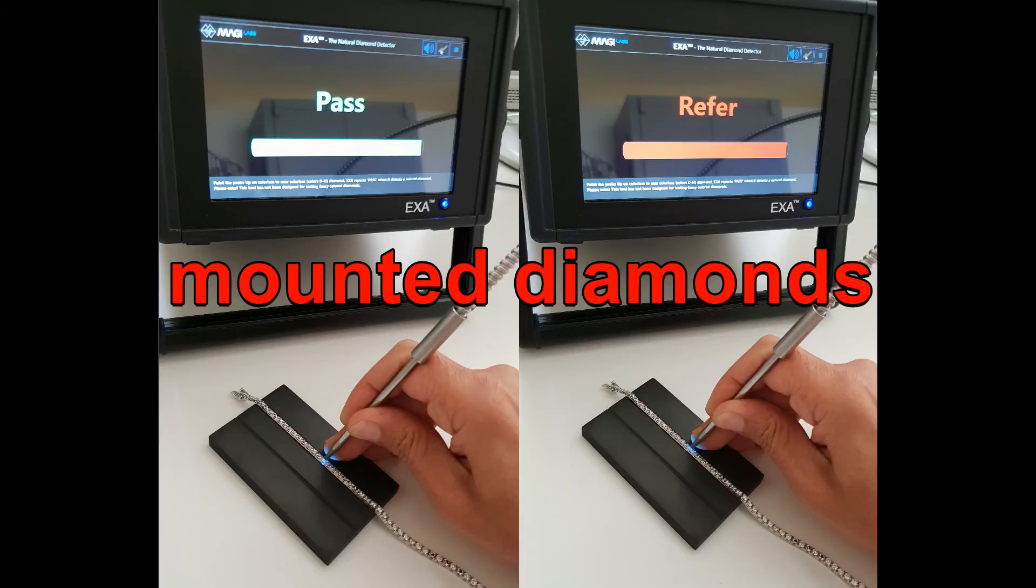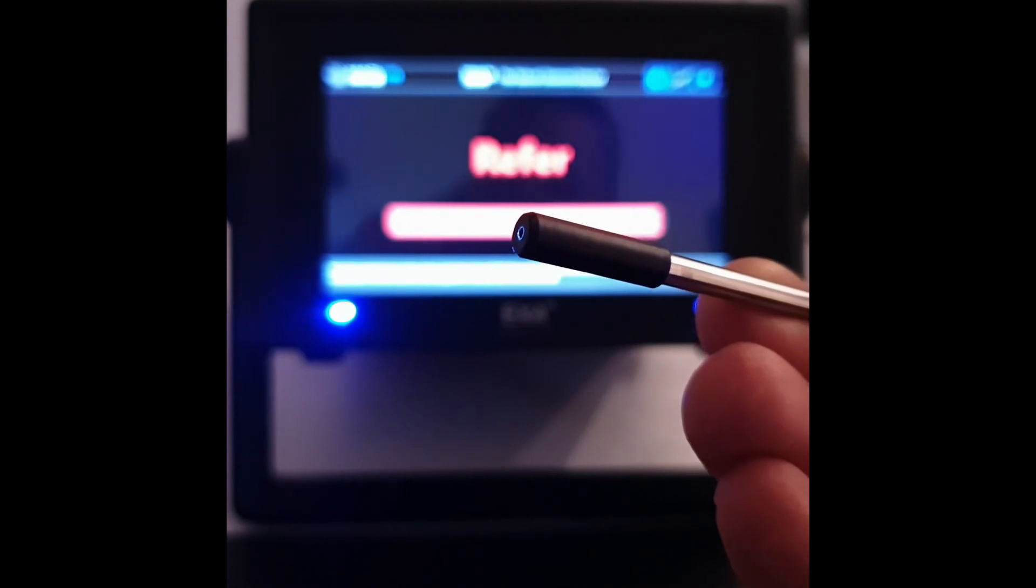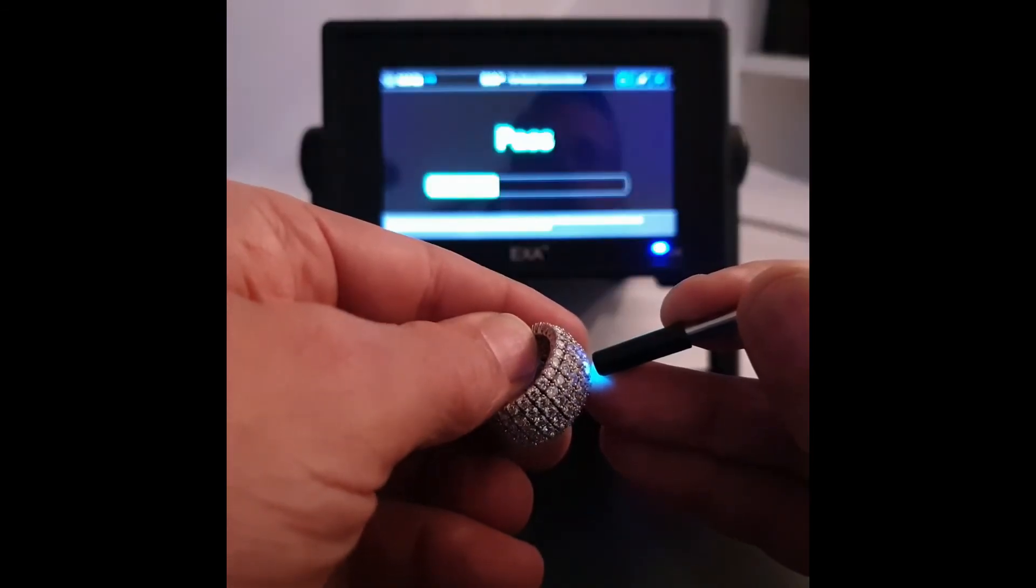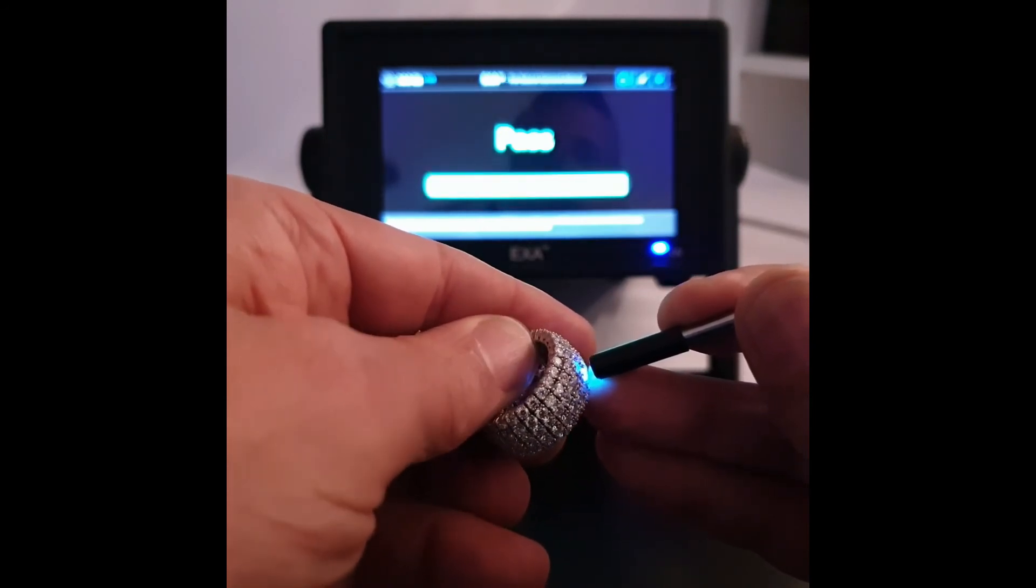Testing mounted diamonds in standard mode: For testing small mounted diamonds, it can be useful to plug the specific adapter provided to reduce the size of the beam. Just aim the probe to the stone and wait for the result, then move slightly away the probe before moving to the next one.